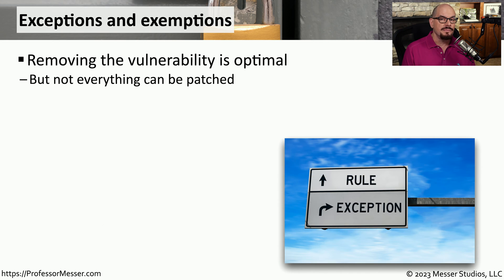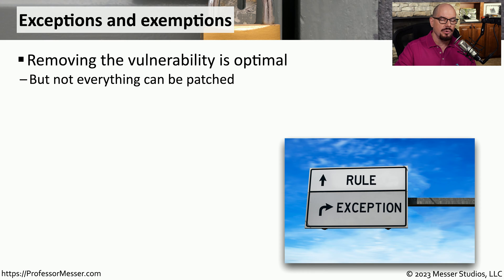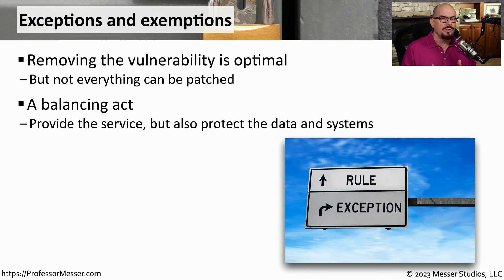There may be times when you can't patch the application due to a conflict, and you may decide that you're not going to provide any type of mitigation beyond what's already available. Many organizations will have a security committee or change control committee that makes decisions on what devices may not receive a patch, and they can decide whether a service would have an exception or an exemption. This is a difficult decision — you don't want to have systems with a vulnerability that could be exploited, but you also want to maintain the uptime and availability of those services.